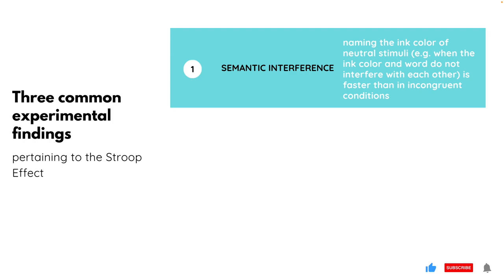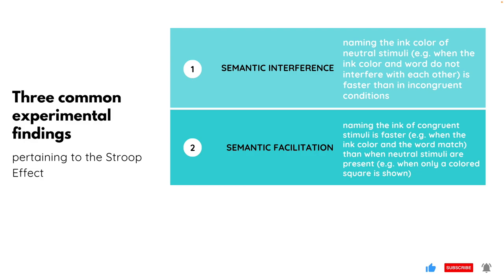The second finding pertains to semantic facilitation, which explains that naming the ink of a congruent stimulus is faster than when responding to a neutral stimulus.